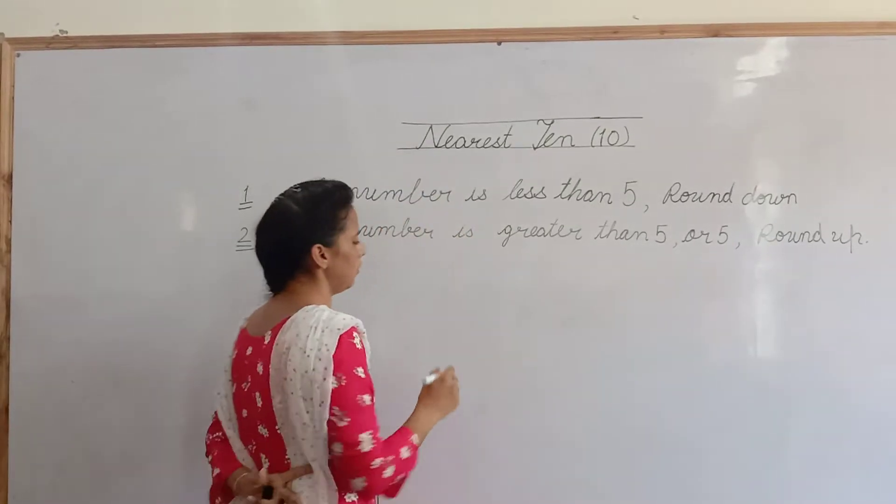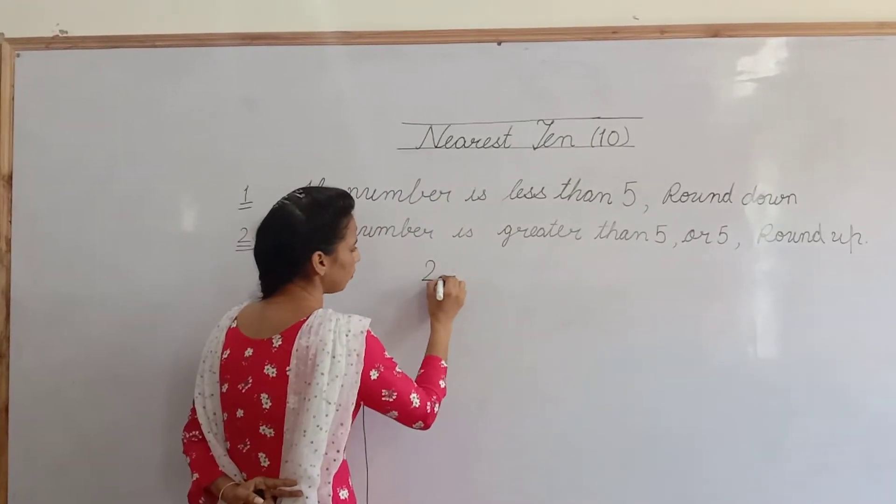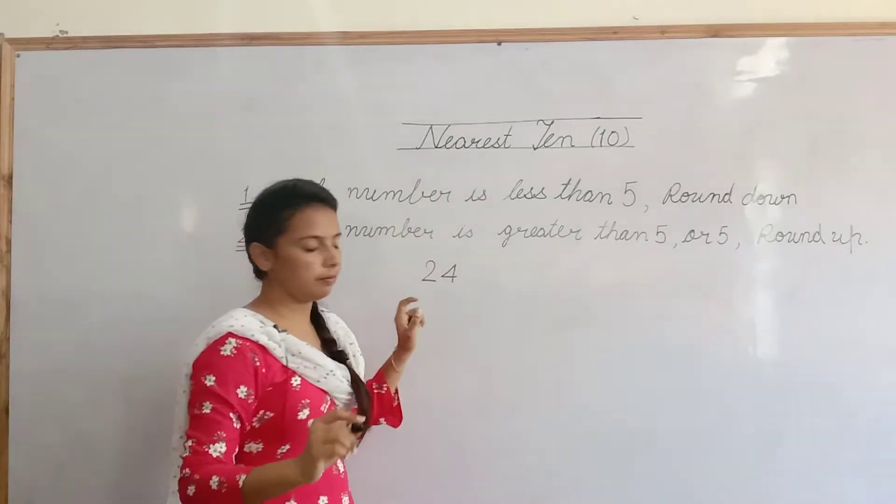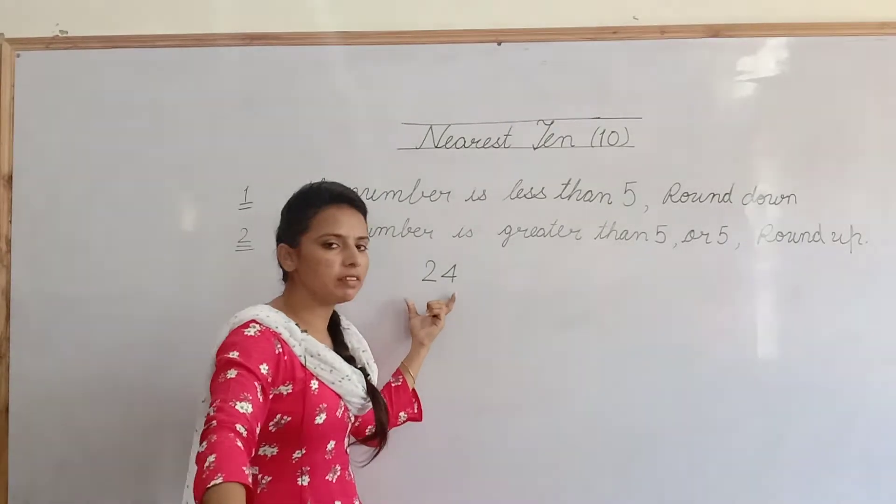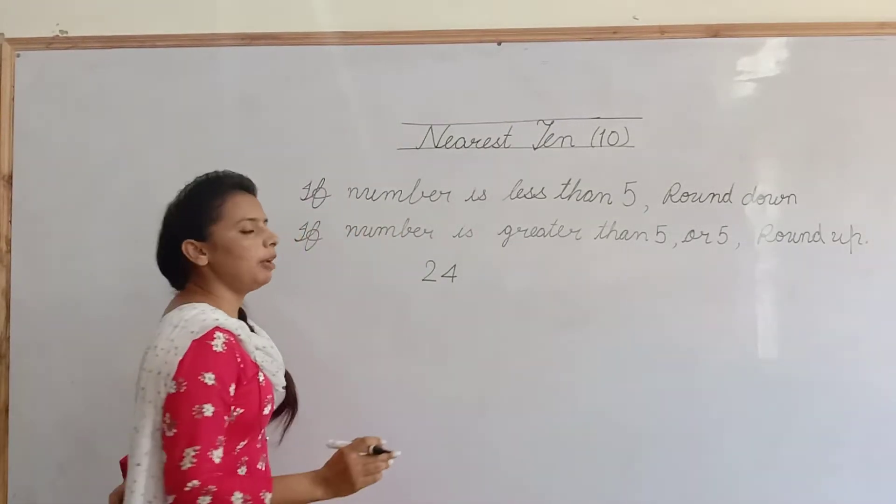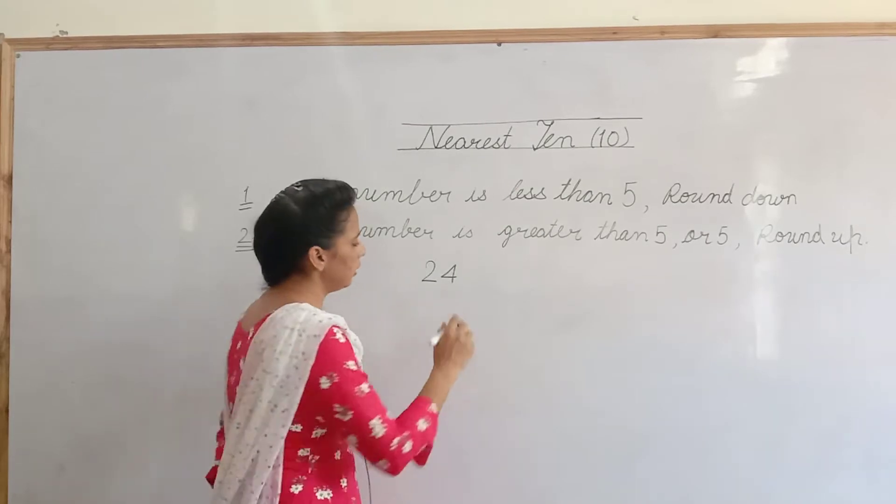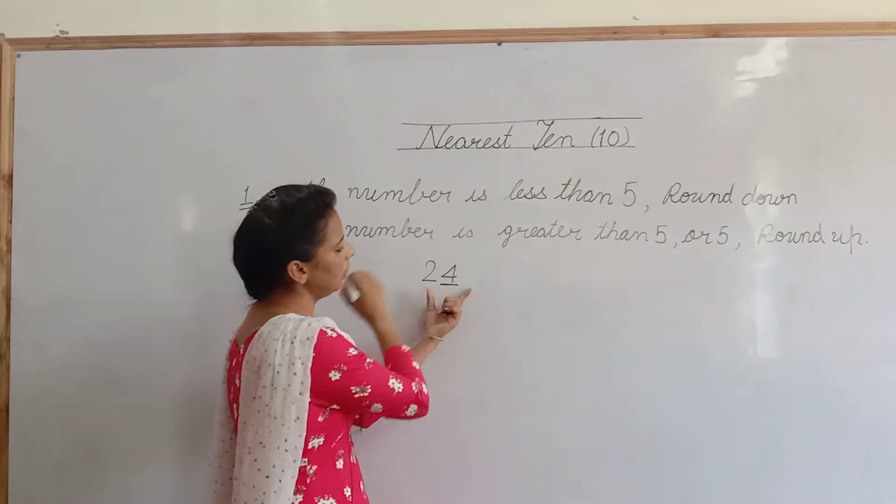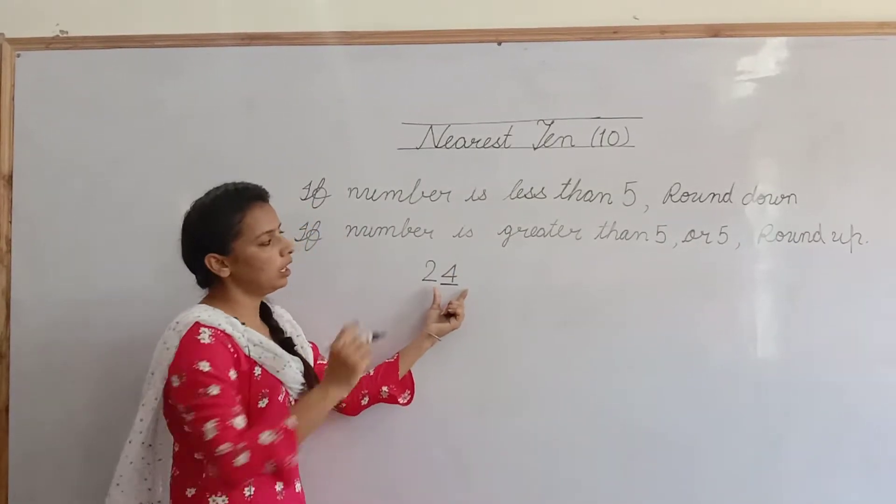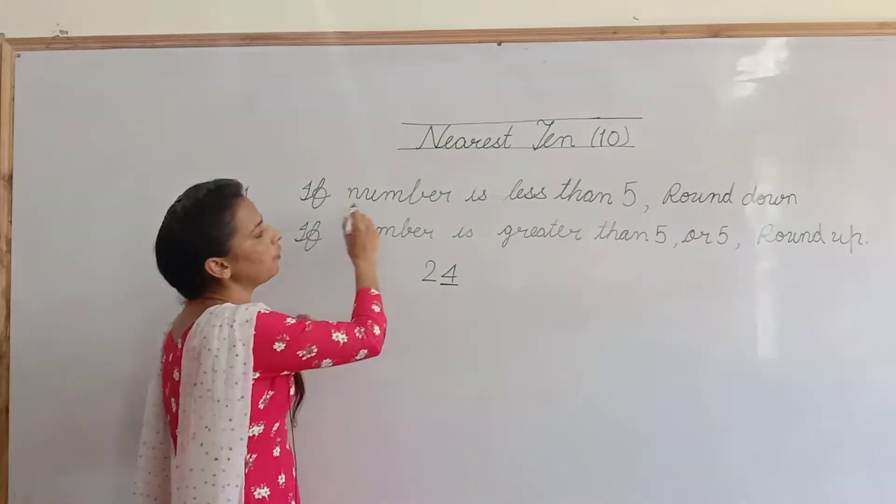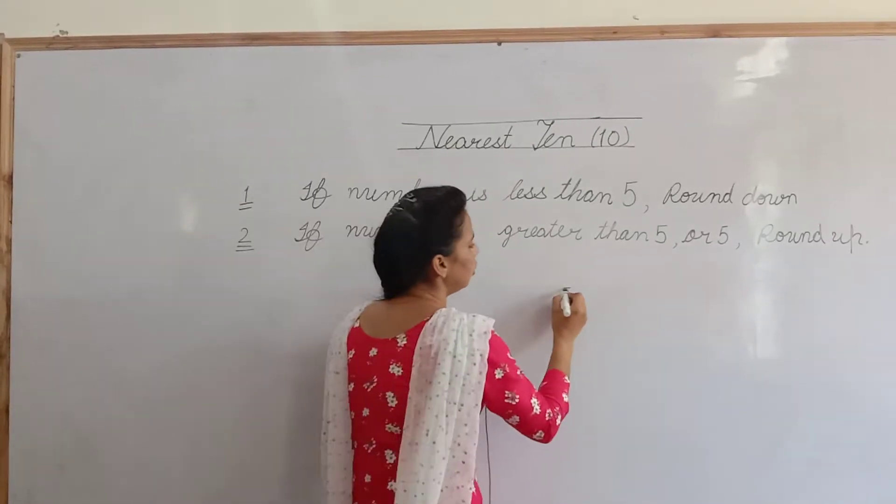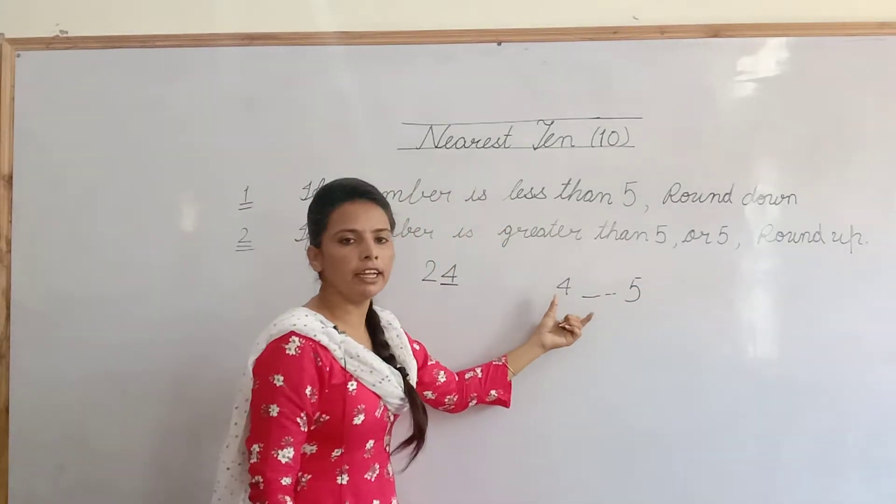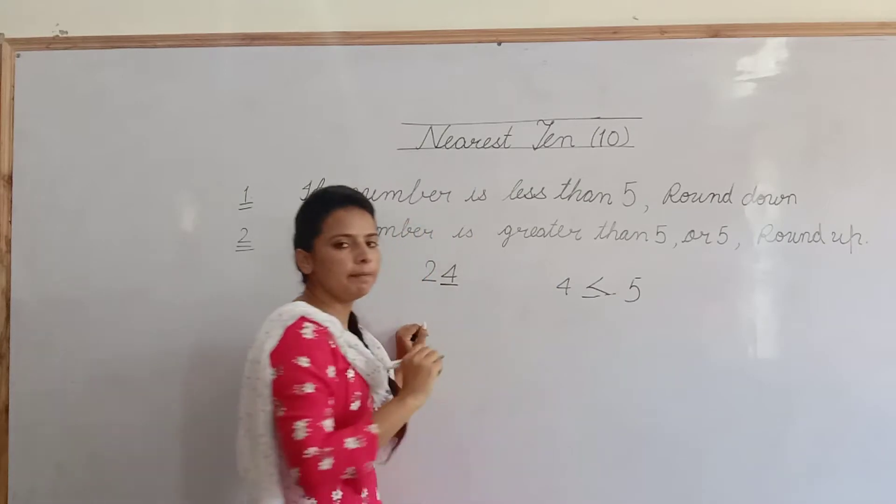Now I am doing two digit number. Estimate this number. 24 to round this number to the nearest 10. Means اس کا estimate کیسے لگائیں گے? کہ ہمیں یہ کس 10 کے nearest ہے? تو اس کے لئے میں آپ کو ایک way بتا رہی ہوں. Please listen carefully. Firstly, look at one's place. One's place پہ جو digit دی گئی ہے, اس کو mind میں set کرو 4. Now, keep this rule in your mind. If number is less than 5. 4, 5. Now, 4, 5 سے چھوٹا ہے یا بڑا ہے? چھوٹا ہے نا? Means less than ہے.